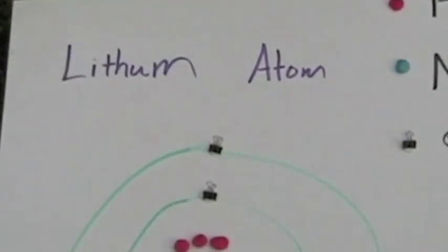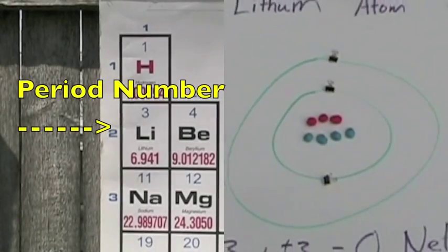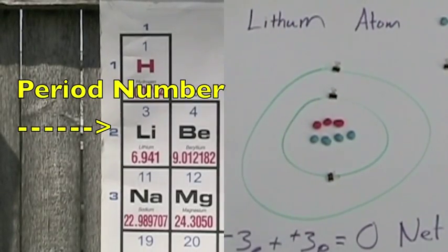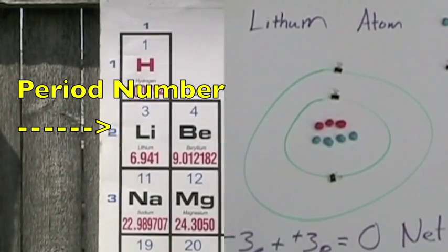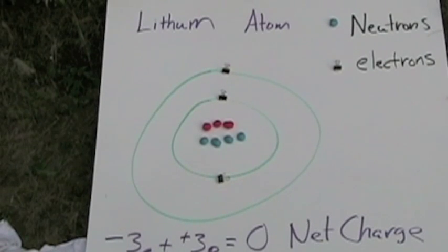Right here is the name, the lithium atom. On the periodic table, you're going to have 2 energy shells. So that's why I have 2 circles. And in the center there, you're going to see 3 red protons and 4 blue neutrons.